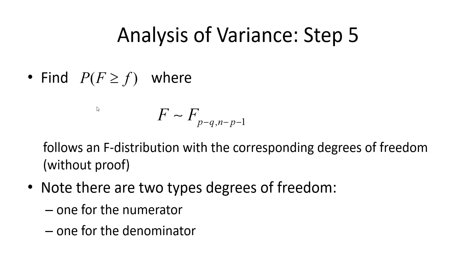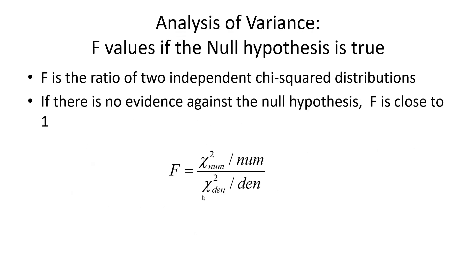So, this new statistic has two degrees of freedom for the numerator and for the denominator. Previously, the T statistic and the chi-square statistic only had one degree of freedom. But this one has two. We take the ratio and F is the ratio of two independent chi-square distributions.